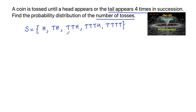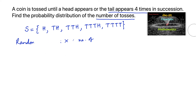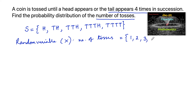So the sample space contains: H, TH, TTH, TTTH, TTTT. From here, the random variable X represents the number of tosses, which can be one, two, three, or four tosses at maximum. The possible values of X are 1, 2, 3, and 4.